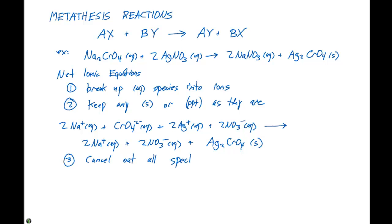The next step in a net ionic equation is to cancel out all spectator ions. And spectator ions are ions that go through a reaction unchanged and appear on both sides. So this reaction that we have written here is what we refer to as a complete ionic equation.